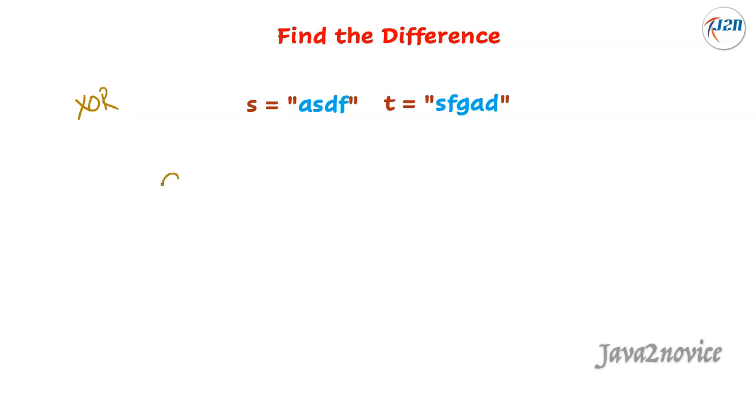We will apply the XOR operator on each character of the input strings. Let's apply: A XOR S XOR D XOR F XOR, now from this string also, S XOR F XOR G XOR A XOR D.